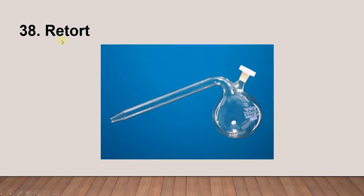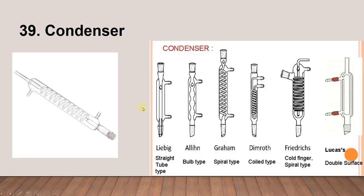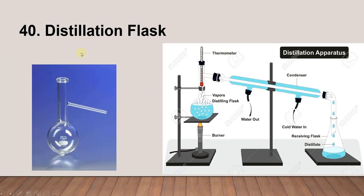Next is the retort. Next is the condenser — we have different kinds of condenser for different purposes. Next is the distillation flask. You can see how the distillation flask, thermometer, and condenser connect together.